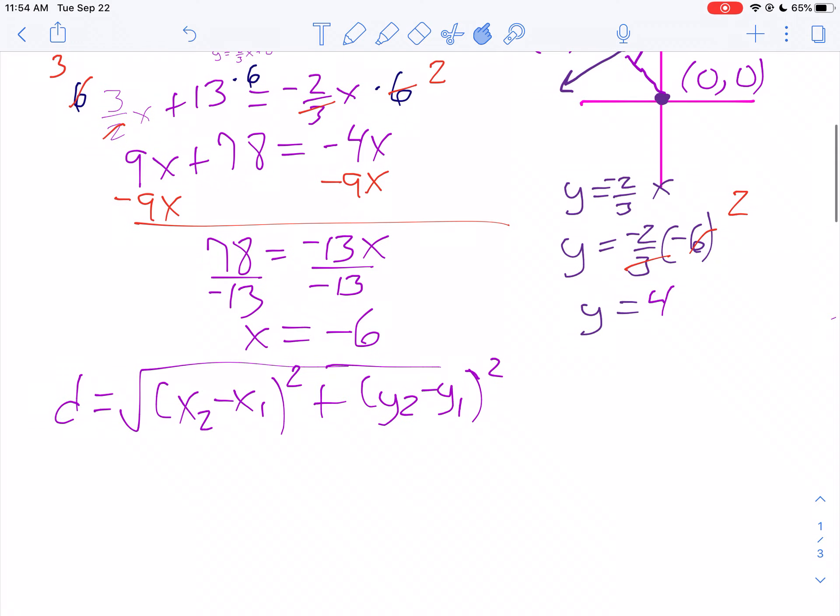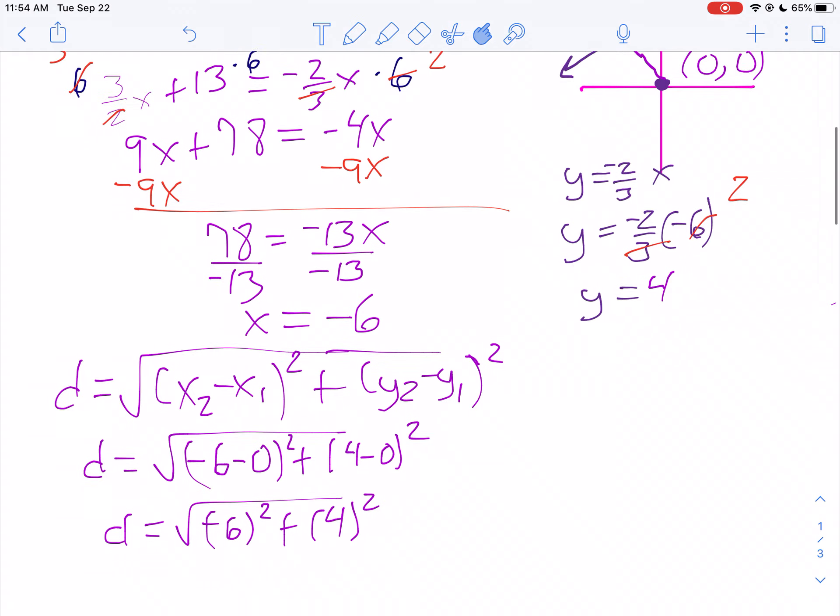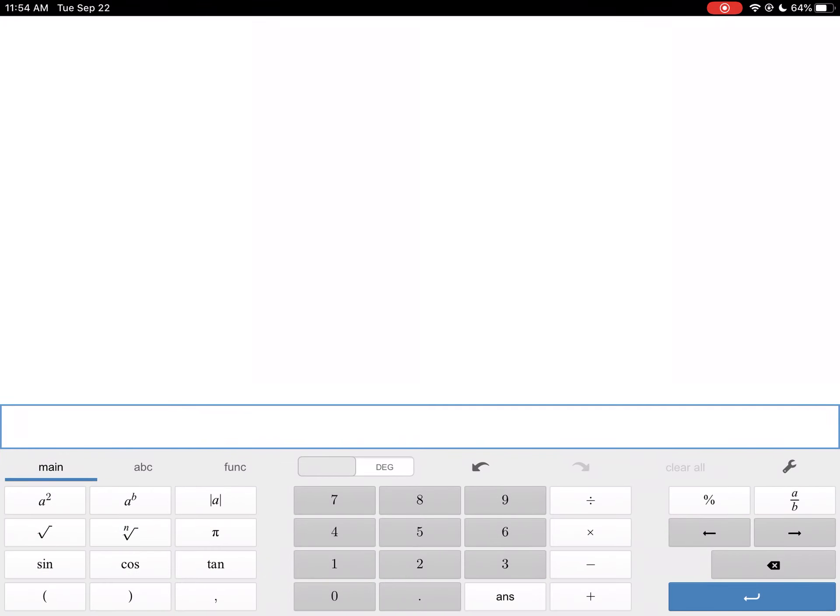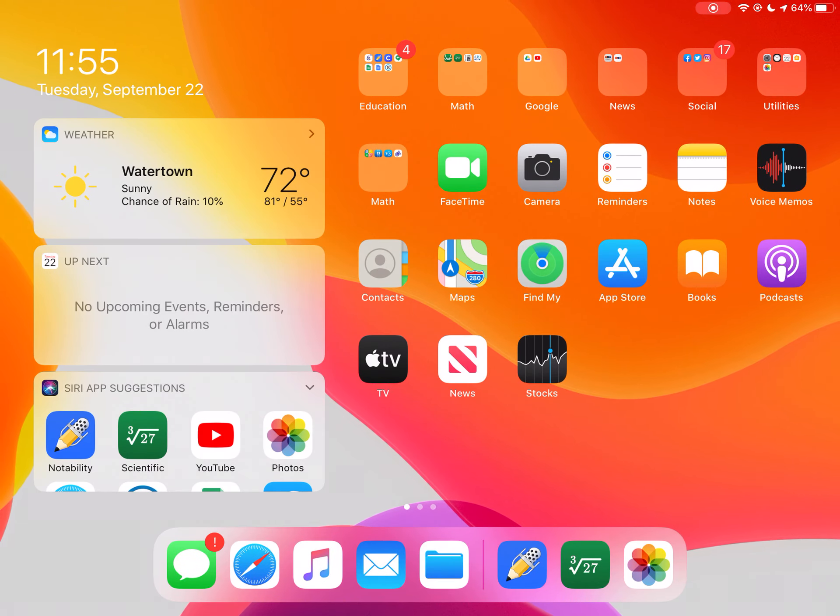Now, one of the cool things about this one, since one of your points is 0, 0, it really makes it simple to work with. You have negative 6 minus 0 squared plus 4 minus 0 squared. So this would be the square root of negative 6 squared plus 4 squared. Well, negative 6 squared is 36, positive 4 squared is positive 16. So 36 plus 16 is 52. Let's take the square root of 52 on our calculator. The square root of 52 is 7.21.